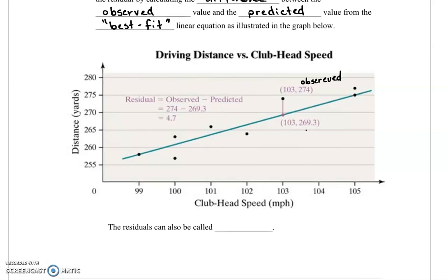So that 269.3 is our predicted value. You notice we're only looking at the response variable values here. So the difference is we subtract those two values.